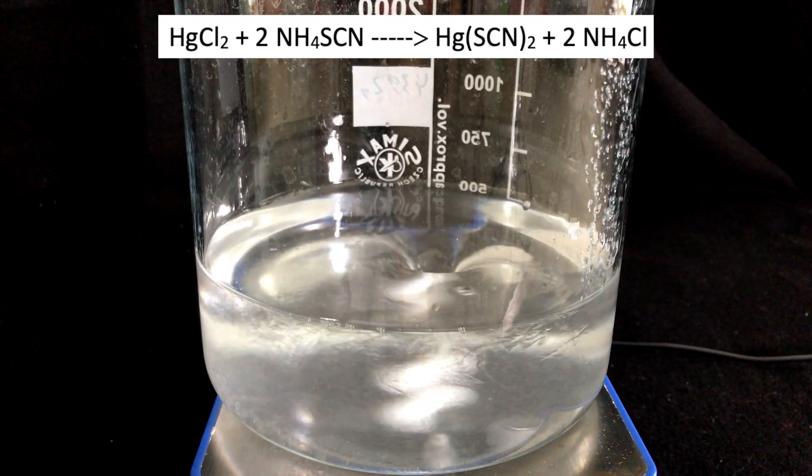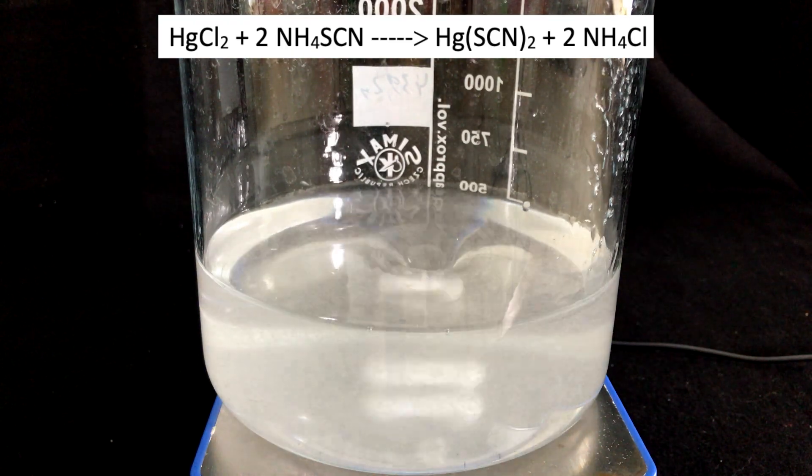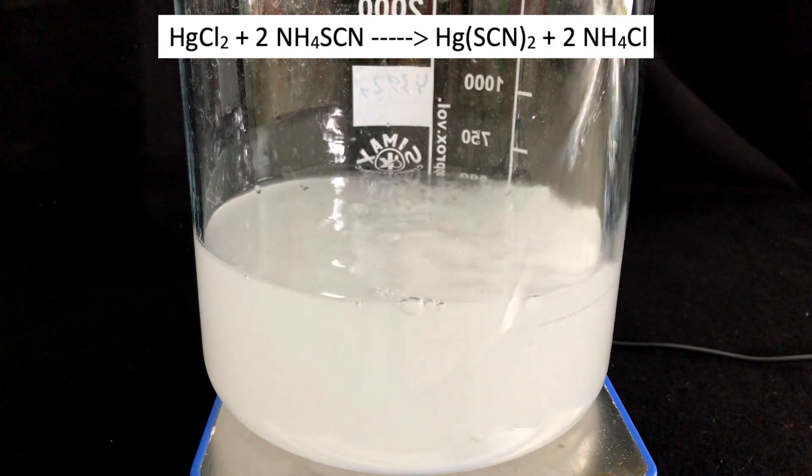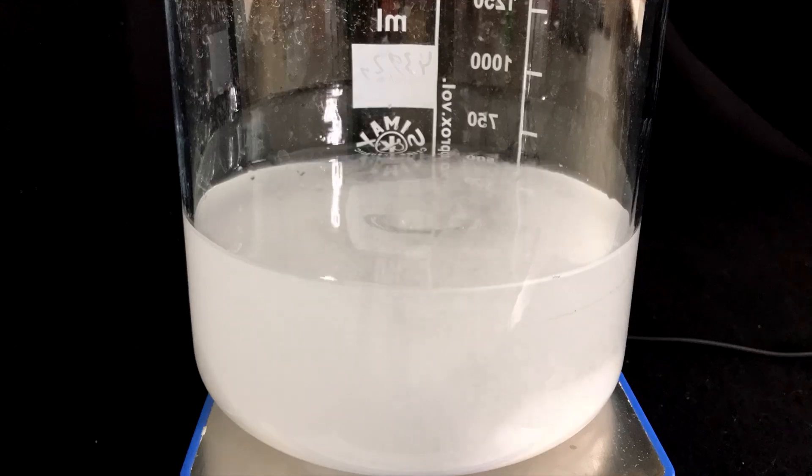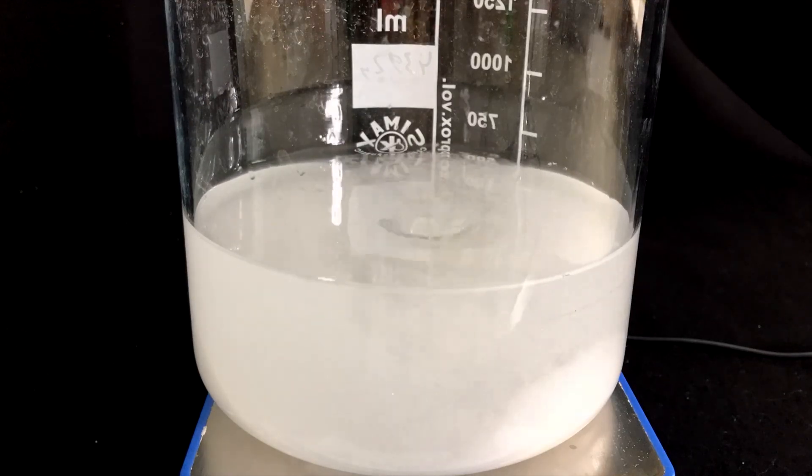Anyways, this doesn't matter. Let's come to the reaction. Mercuric chloride reacts with ammonium thiocyanate to form mercury thiocyanate and ammonium chloride. After some time, the mercury thiocyanate fortunately decided to crash out.